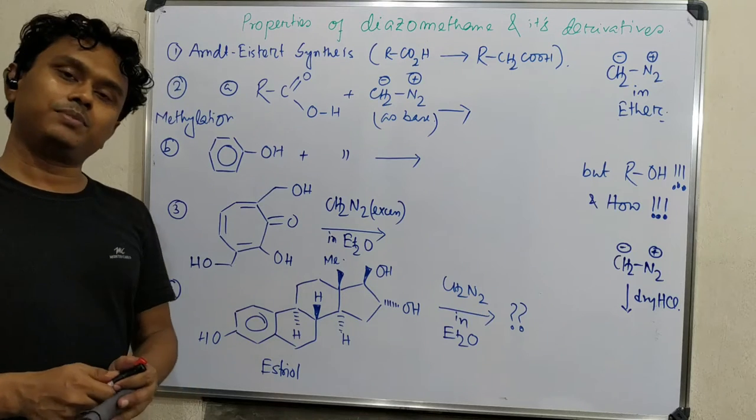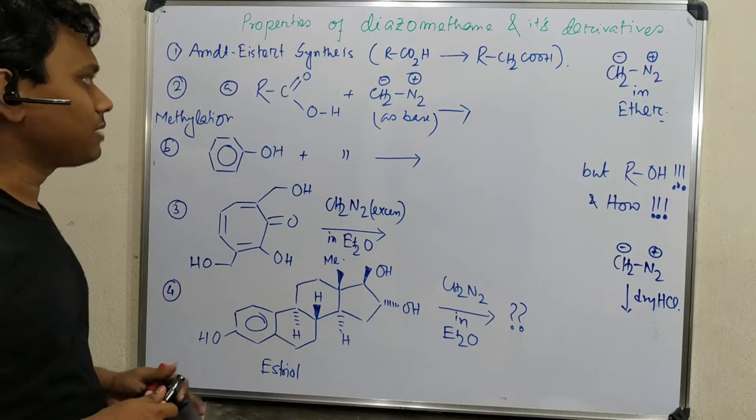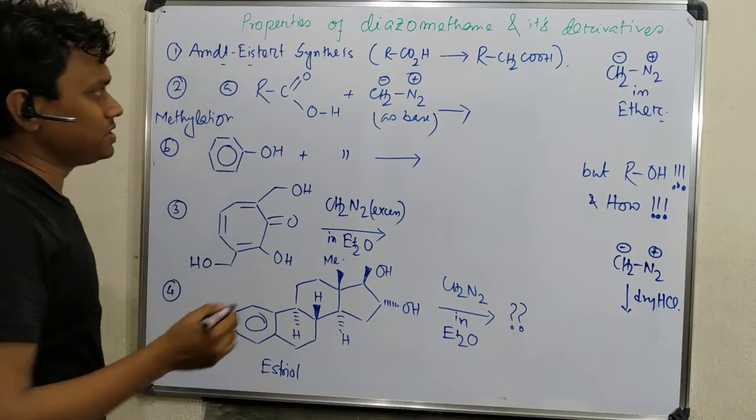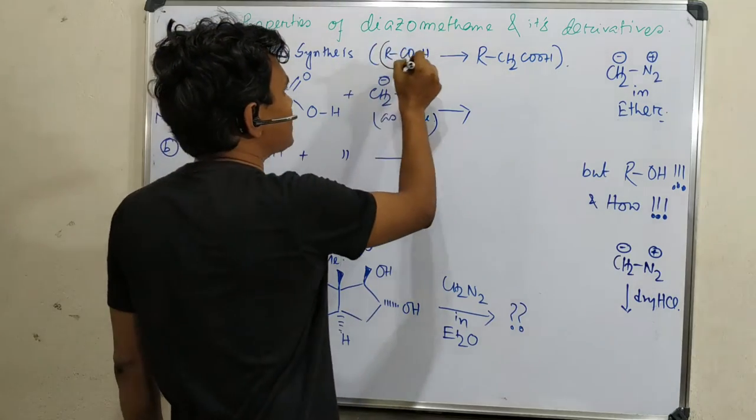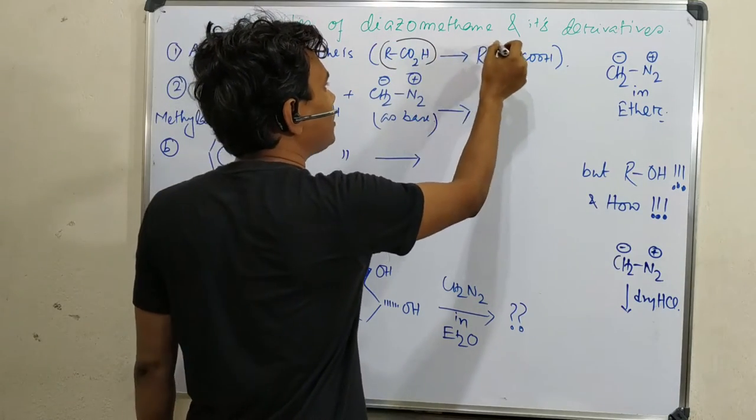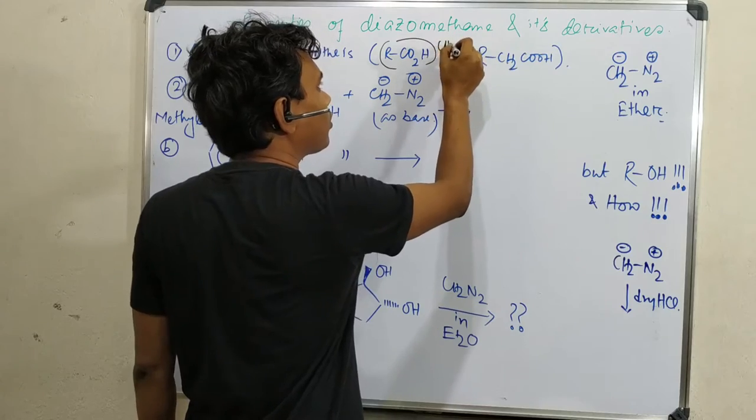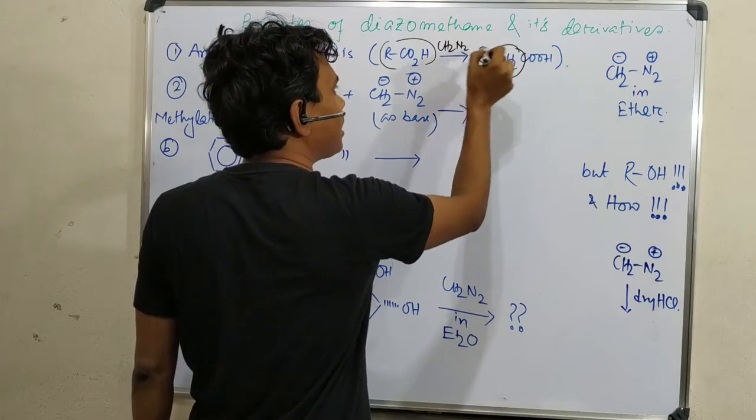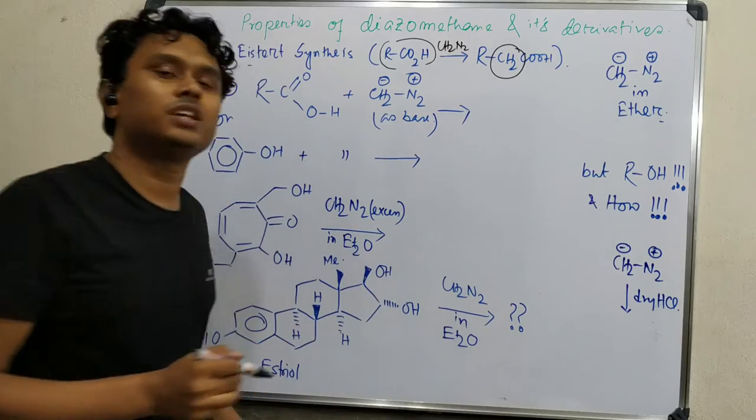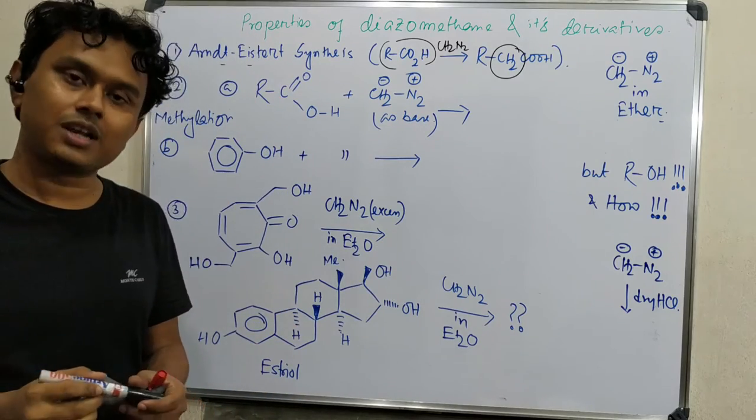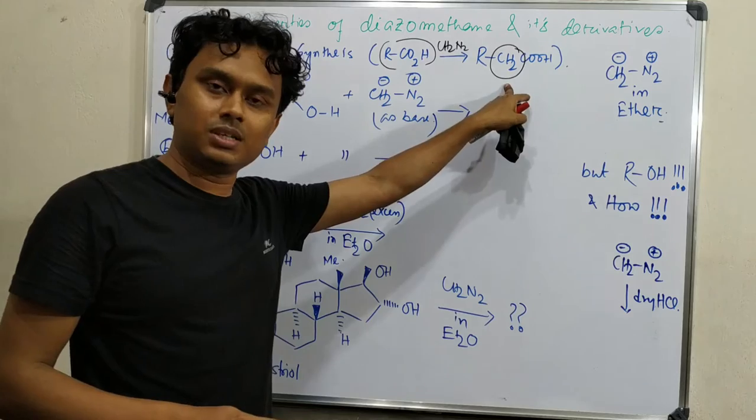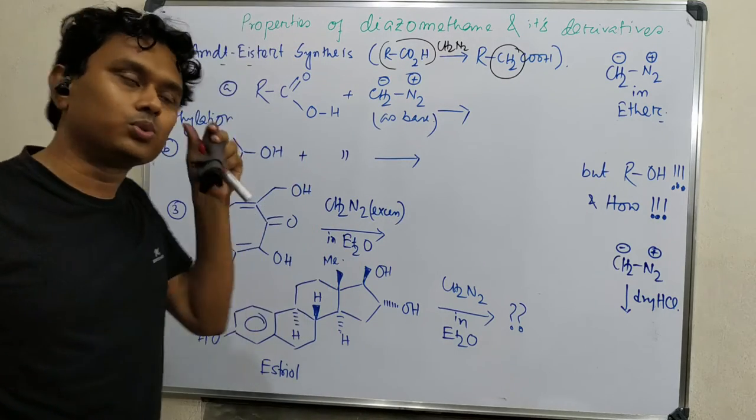The most important application of diazomethane is Arndt-Eistert synthesis, which converts carboxylic acid to one unit higher homologue of carboxylic acid. This CH2 is coming from diazomethane. I have made a dedicated video on Arndt-Eistert reaction and Wolff rearrangement, so I am not going to discuss this here. I will provide the link, please go through that.